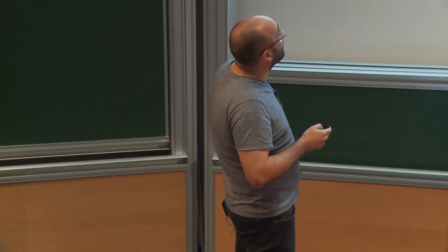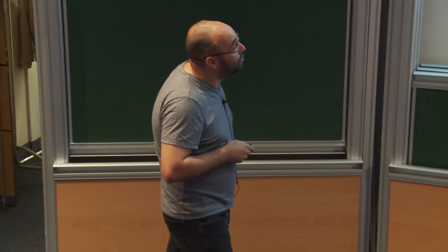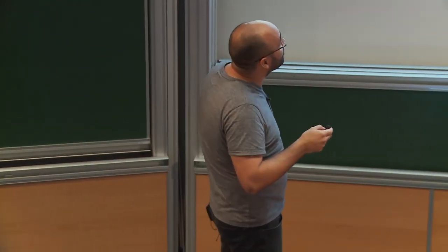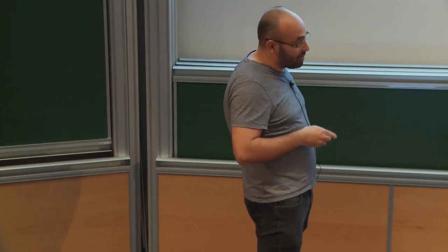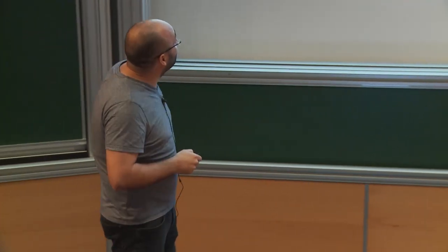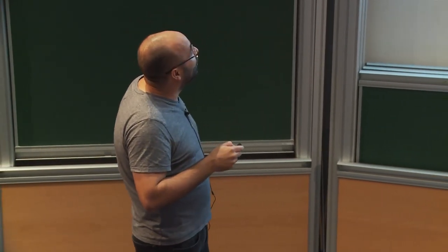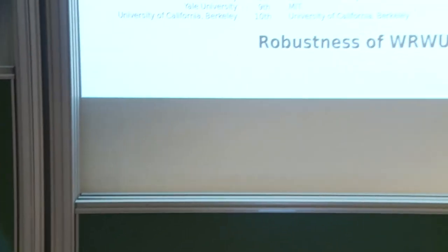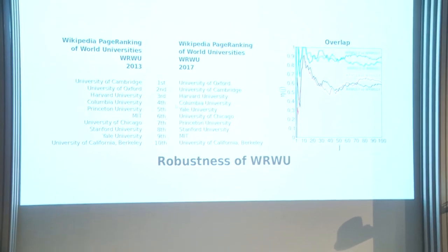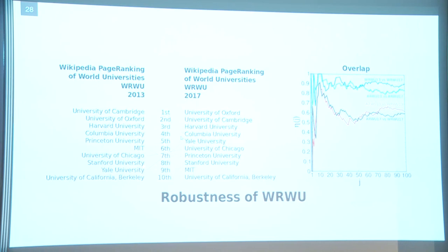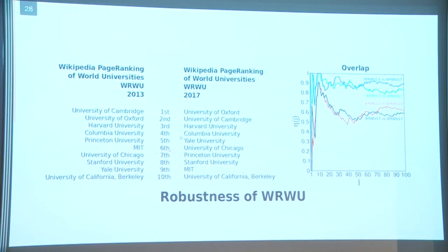We also have the ranking for 2017. Comparing 2017 with 2013, we have the same top 10, only with some displacement of ranks for different universities. We have the same universities for the top 10, and if we look at the top 11, we reach 90% similarity — demonstrating the robustness of the ranking. For Shanghai, we reach 85% stability.